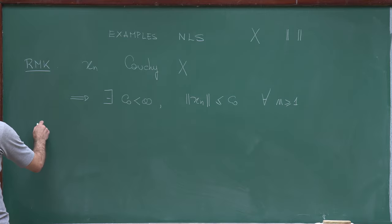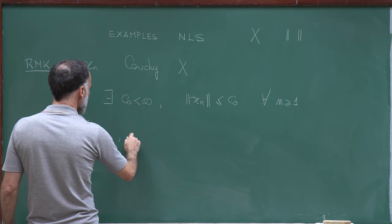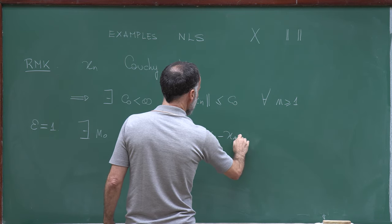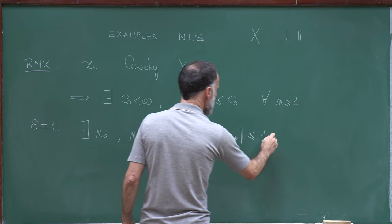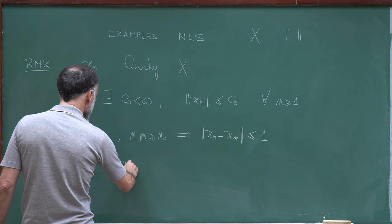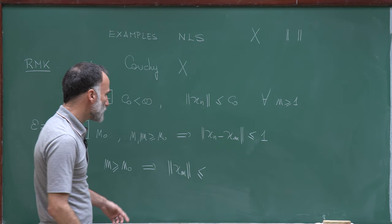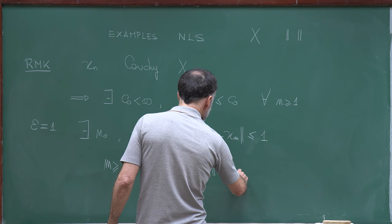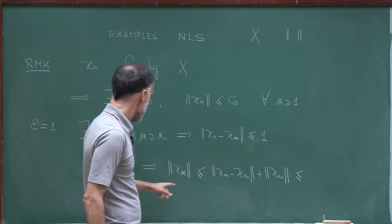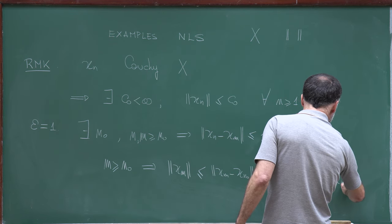That's very easy. Take epsilon equal to 1. Since xn is Cauchy, there exists n₀ such that if n and m are larger than n₀, then the norm of xn minus xm is smaller than 1. This means that if m is larger than n₀, by the triangle inequality, the norm of xm is bounded by the norm of xm minus xn₀ plus the norm of xn₀, which is bounded by 1 plus the norm of xn₀.